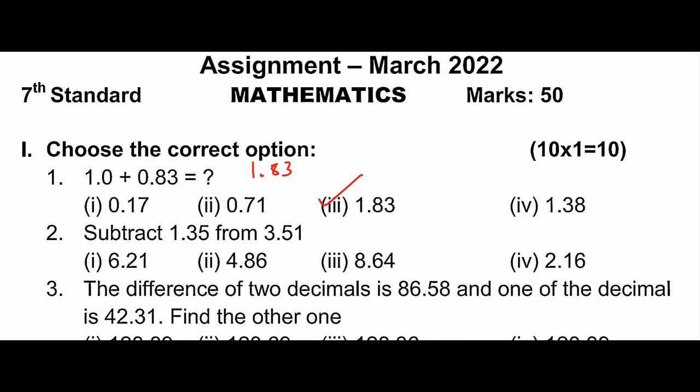Next: subtract 1.35 from 3.51. So 3.51 minus 1.35. We subtract to get 2.16.